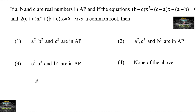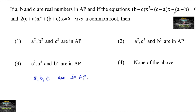If a, b, and c are real numbers in arithmetic progression, and the equations (b minus c)x² + (c minus a)x + (a minus b) = 0, and 2(c plus a)x² + (b plus c)x = 0 have a common root.